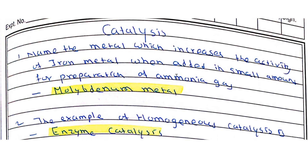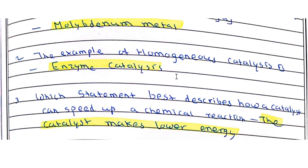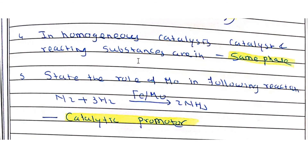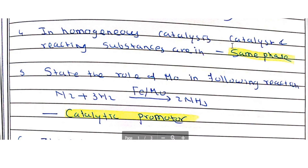Molybdenum is the metal added in small amounts to iron to increase its catalytic activity in the preparation of ammonia gas; molybdenum acts as a promoter. An example of homogeneous catalysis is enzyme catalysis. A catalyst speeds up a chemical reaction by lowering the activation energy.